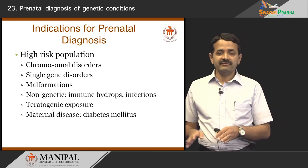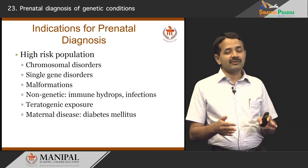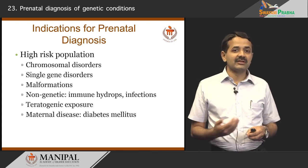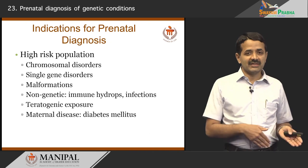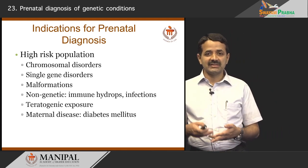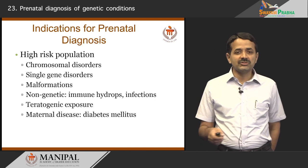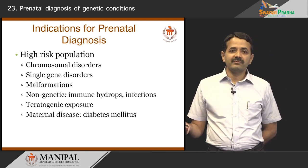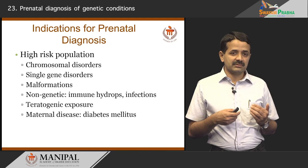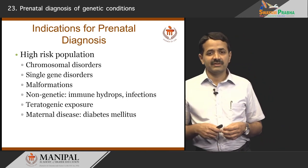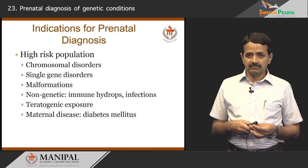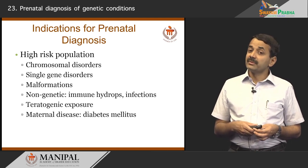In the high risk population, high risk means those who have more than the normal risk compared to the general population for a certain genetic disorder or birth defect. These include chromosomal disorders — such as a previous child having Down syndrome or a chromosomal problem — and single gene disorders like thalassemia, sickle cell disease, hemophilia, spinal muscular atrophy, and Duchenne muscular dystrophy. Malformations also place families at higher risk, for example a previous child with malformation, or non-genetic indications like immune hydrops due to blood group incompatibility.